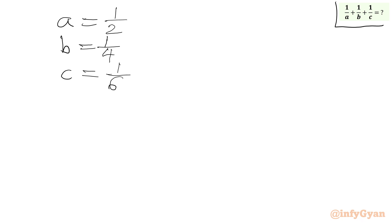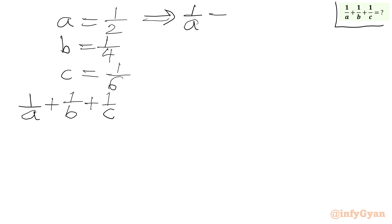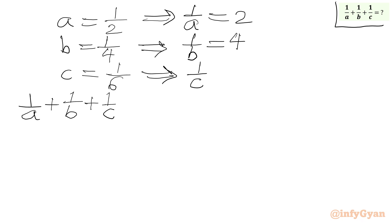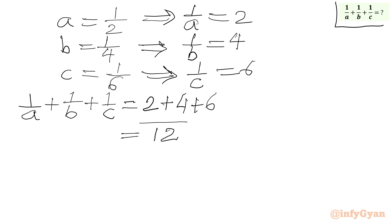Now our target is to evaluate 1/a + 1/b + 1/c. Since a = 1/2, we get 1/a = 2. Since b = 1/4, we get 1/b = 4. And 1/c = 6. So the expression equals 2 + 4 + 6 = 12. Our final answer is 12. I hope friends you will like this video. Thank you so very much for watching — don't forget to like, share, and subscribe. Bye-bye!